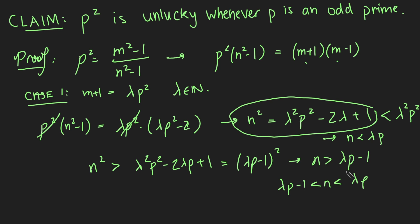Hence, case 1 gives us a contradiction. And in fact, you can do something very similar for case 2, which would be where m minus 1 is a multiple of p squared. And you'll get a contradiction in a very similar manner.